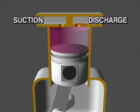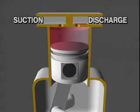As the piston moves up, it reduces the volume of vapor space in the cylinder. This action increases the pressure of the vapor trapped in the cylinder.